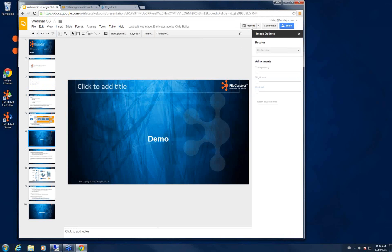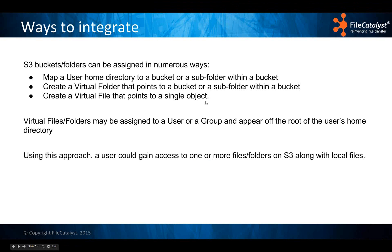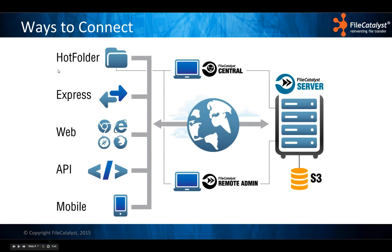You can map the home directory directly to a bucket or subfolder within a bucket, or create virtual folders and virtual files that point to S3 — and these can be assigned to a group so users gain access through that group. It's a powerful tool for sharing files whether content is in S3 or outside of S3. The ways to connect are very familiar: hot folder, express, and all other clients — it's completely transparent. FileCatalyst server treats S3 like any other storage, and this will be backwards compatible with previous versions of the clients.